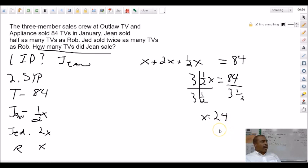So, our answer is 24, right? Wrong. Because remember, the question was, how many TVs did Gene sell? X equals Rob. And so, Gene sold half as many as Rob. So, the answer then would be half of 24 would be 12.